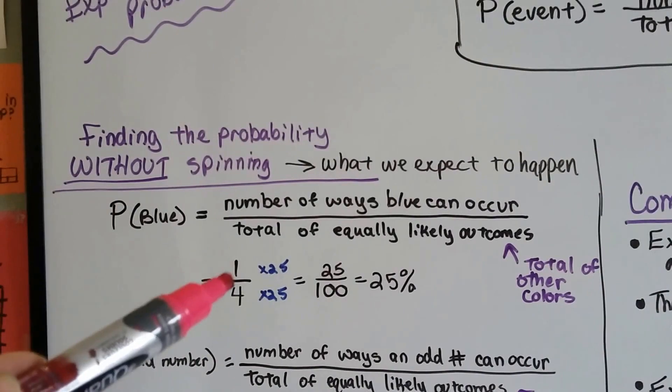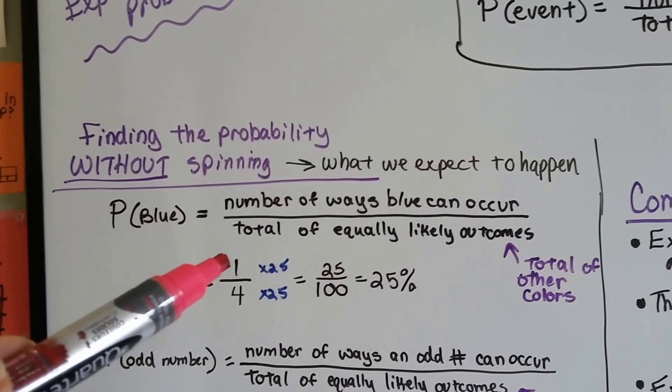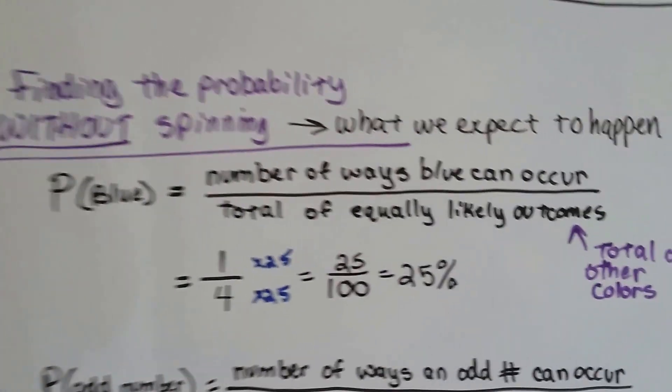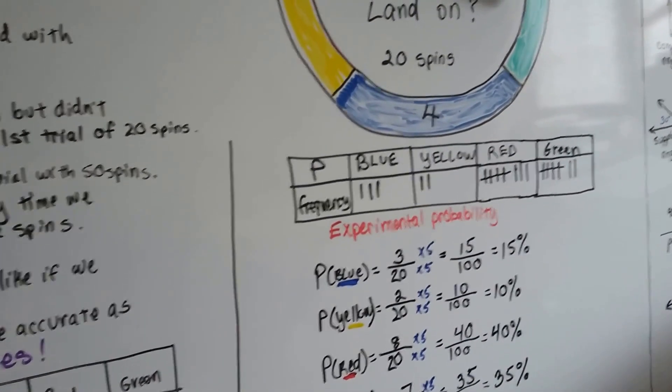We didn't spin anything, that's just how it looks. Because there's 1 blue, and out of 4 colors, it's got a 1 out of 4 chance, right? So, if we look at what actually happened, we can see it only happened 15% of the time.